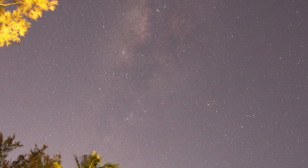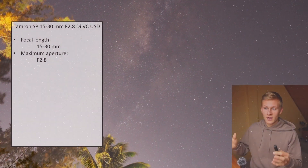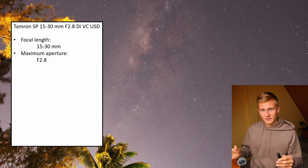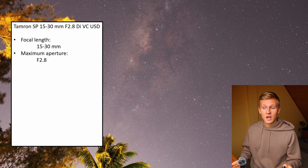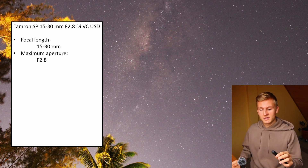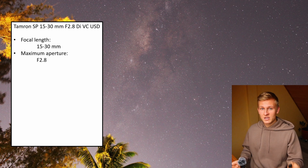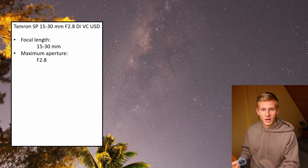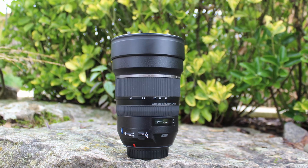This lens has a maximum aperture of f/2.8. When I planned to buy a lens for astrophotography it was very important to have a lens with a good maximum aperture of f/2.8, because that helps me collect as much light as possible. Objects like the Milky Way are very dark, so it's important to collect as much light as possible. In this case you have a maximum aperture of f/2.8 at every focal length.